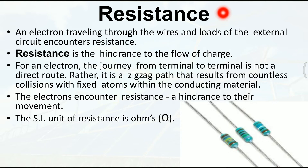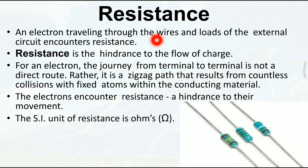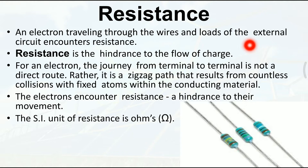A constant was added to the proportional equation and that constant is nothing else but resistance. So what is resistance? An electron traveling through the wires and the external circuit encounters hindrance. जभी भी circuit में से electricity pass होती है, electrons pass होते हैं, तब उनके अंदर resistance encounter किया जाता है।